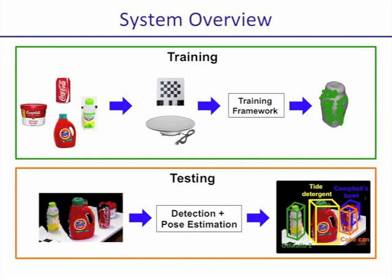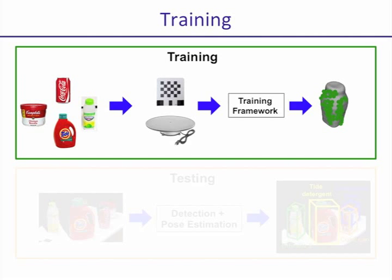Before going into our main contributions, I'll first give a brief system overview. At training time, we have a number of object instances and we put each of these objects onto a training rig, such as a turntable with a fixed checkerboard. We use an RGBD sensor, such as the Microsoft Kinect, to get an image and a point cloud for each view of the object. After passing these through our training framework, we obtain our object models, which consist of feature descriptors along with their associated 3D coordinates with respect to the object origin. We can train models for a number of feature types, such as texture features, shape features, or color features.